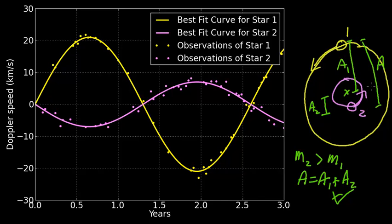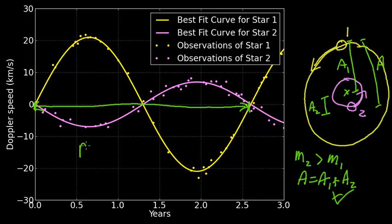We also need the period of the orbit — the time it takes to go from zero back to zero. This time is the period of the orbit, and from the look of it, it's a little over 2.5 years, so the period is about 2.6 years.